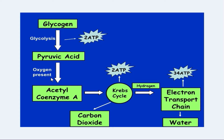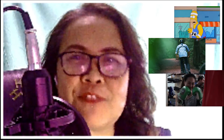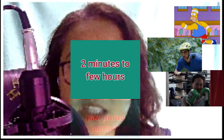In the presence of oxygen, pyruvic acid is converted into acetyl-coenzyme A. It enters into the mitochondria, where the Krebs cycle takes place. Carbon dioxide and hydrogen are produced to resynthesize two molecules of ATP. Hydrogen is carried to the electron transport chain, where water is produced and energy to resynthesize 34 ATP.